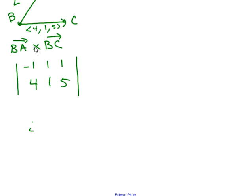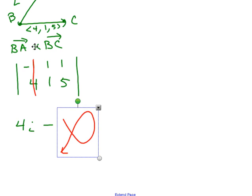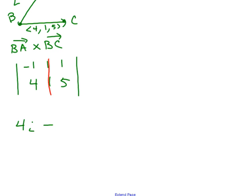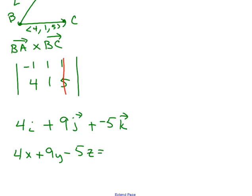Now we do our cross product using the determinant method. For the i component, I get 5 minus 1, which is 4i. Then I take the opposite of the determinant for j: that's negative five minus four, giving negative nine, so taking the opposite gives plus 9j. Finally, the last determinant gives negative one minus four, which is −5k. So the normal vector to the plane containing points A, B, and C is ⟨4, 9, −5⟩.